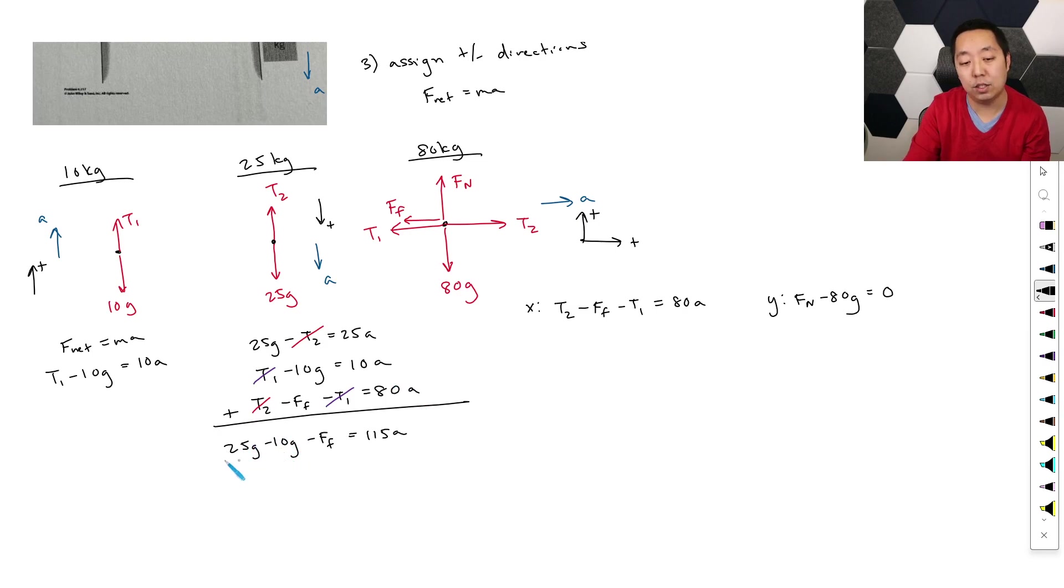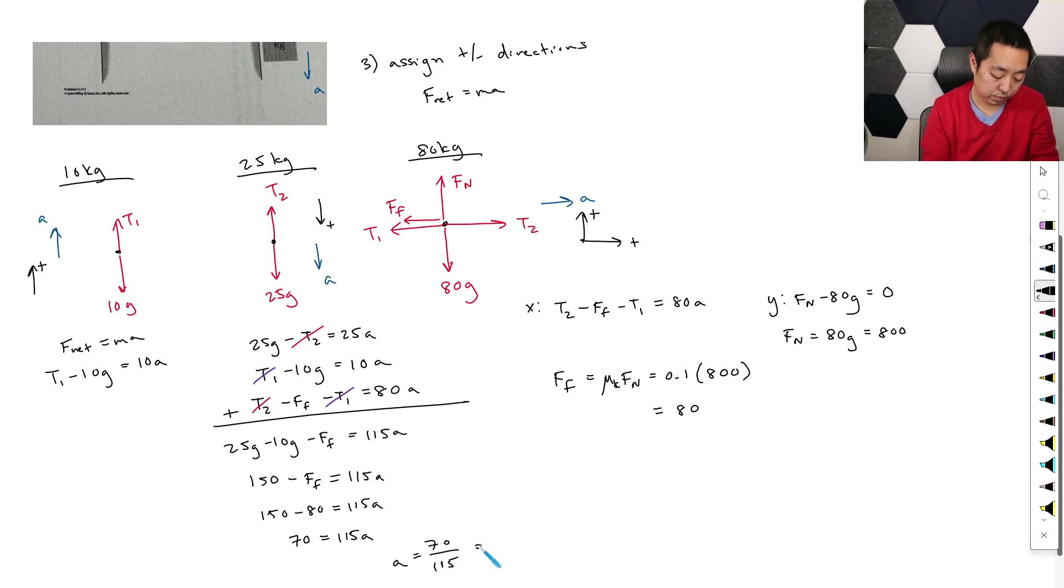Now if I use g of 10, this is 250 minus 100, so that's 150 minus force of friction is equal to 115a. Now I need to figure out what the force of friction is. Now force of friction because it's kinetic friction is mu k times the normal force. That's 0.1 times the normal force. Normal force I can solve from over here is 80g. And if I use g of 10, that's 800. So this is 0.1 times 800, which is 80. So then I get 150 minus 80 is equal to 115a. This is 70 is equal to 115a. And I can solve for a as 70 divided by 115, and that gives me 0.61 meters per second squared.